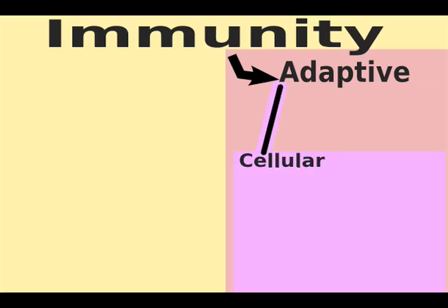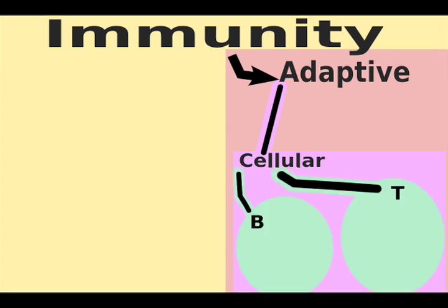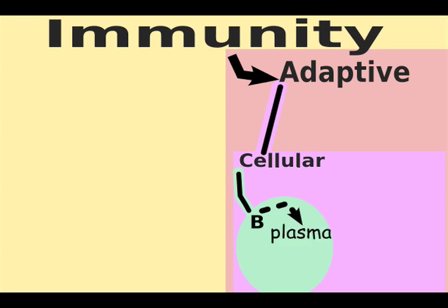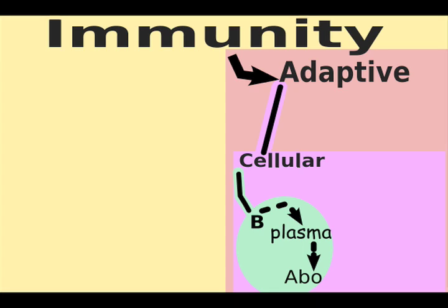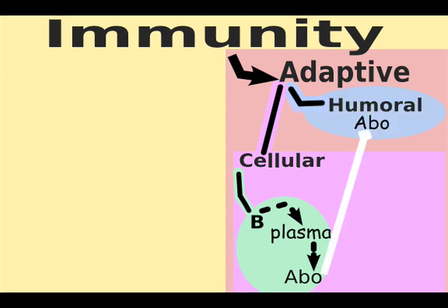Now let's look at the last quadrant: adaptive cellular immunity. The adaptive cellular quadrant involves B cells or T cells. B cells grow up to be plasma cells or other types of B cells, such as memory B cells. Plasma cells produce antibodies. These antibodies float around in the blood plasma — you may remember antibodies as part of the adaptive humoral system.